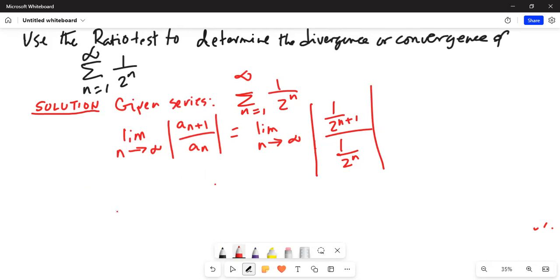And that will be equal to limit n tends to infinity, absolute value of 2^n. Because 2^n is in the denominator and it comes in the numerator, and it's 2^(n+1) in the denominator. And that will be equal to limit n tends to infinity, 2^n divided by 2^n multiplied by 2, which is equal to half.